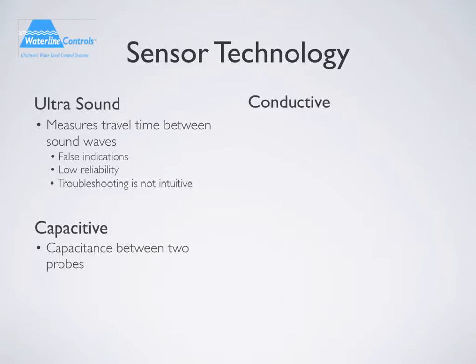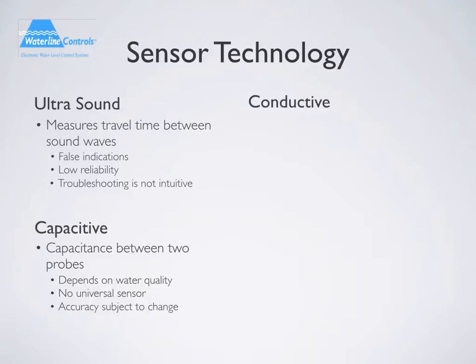Capacitive technology is designed to measure the water level in an environment by determining the capacitance between two probes. The capacitance of water depends on its quality, which itself varies between geographical regions. Because of this, it's hard to design a universal capacitive sensor. Many are sold to locations outside their intended region, causing their accuracy to fall between 10 to 15 percent. We believe this is not accurate enough to be used as a water level control — we only recommend this technology as a level indicator.